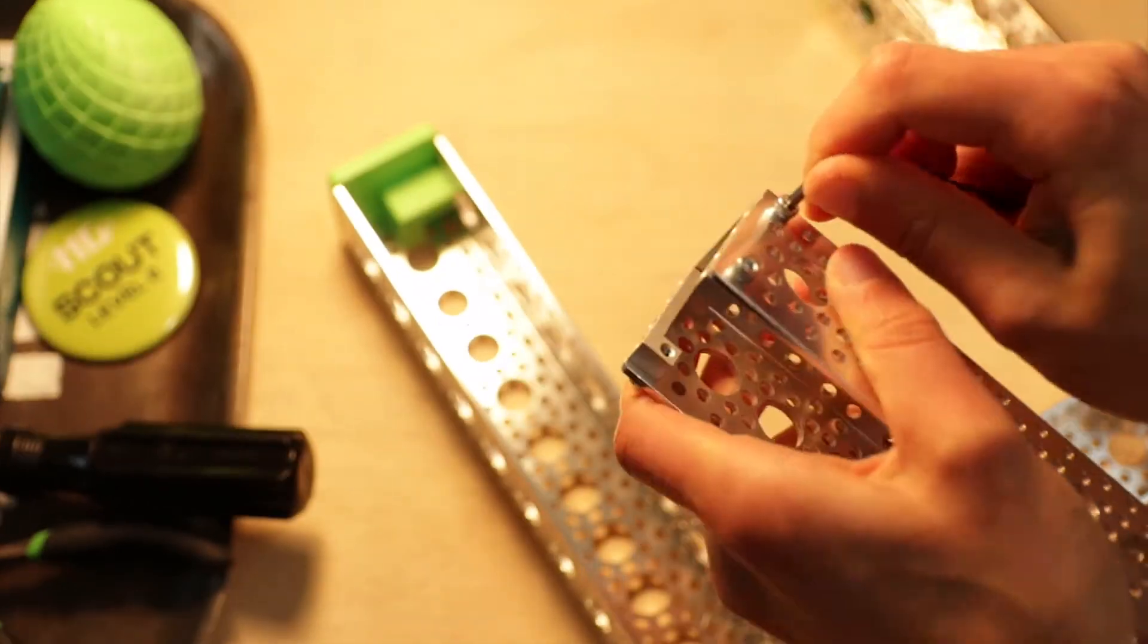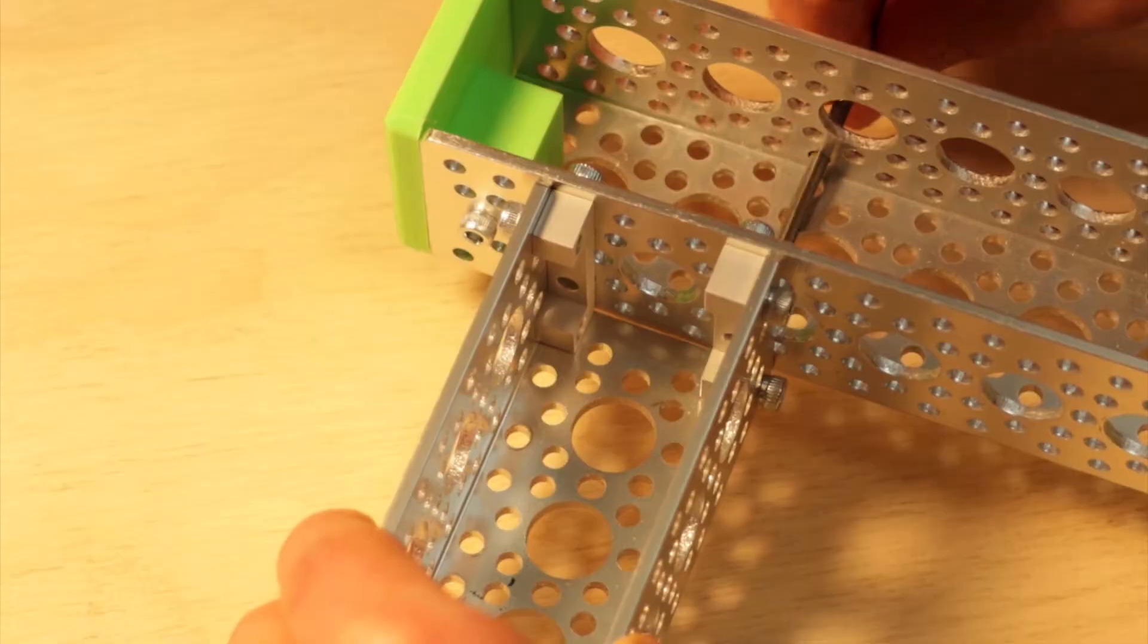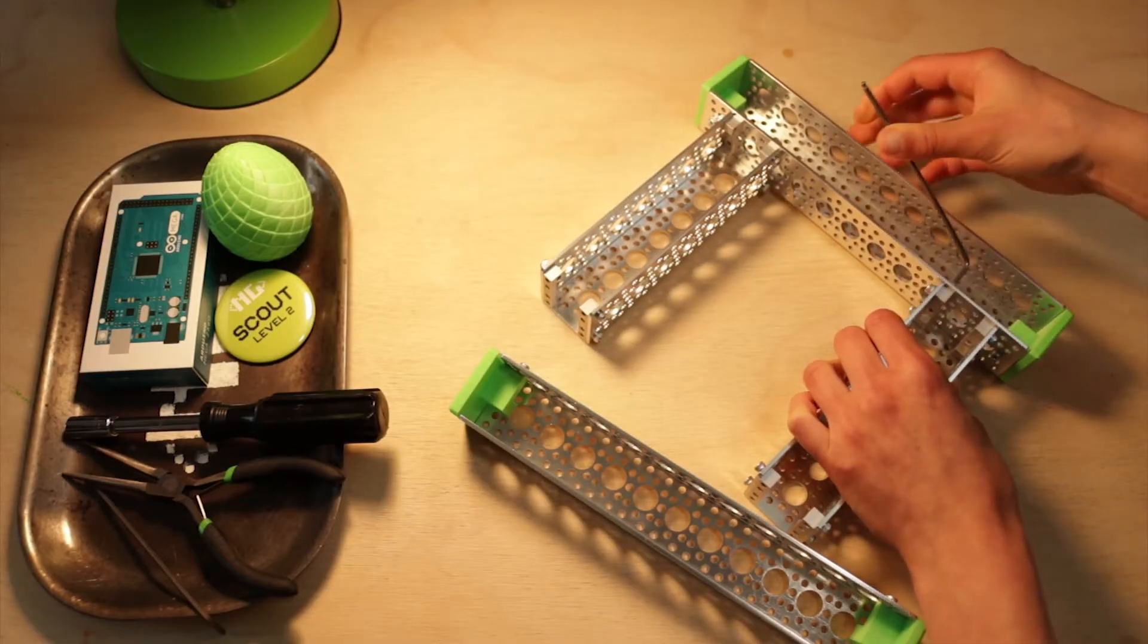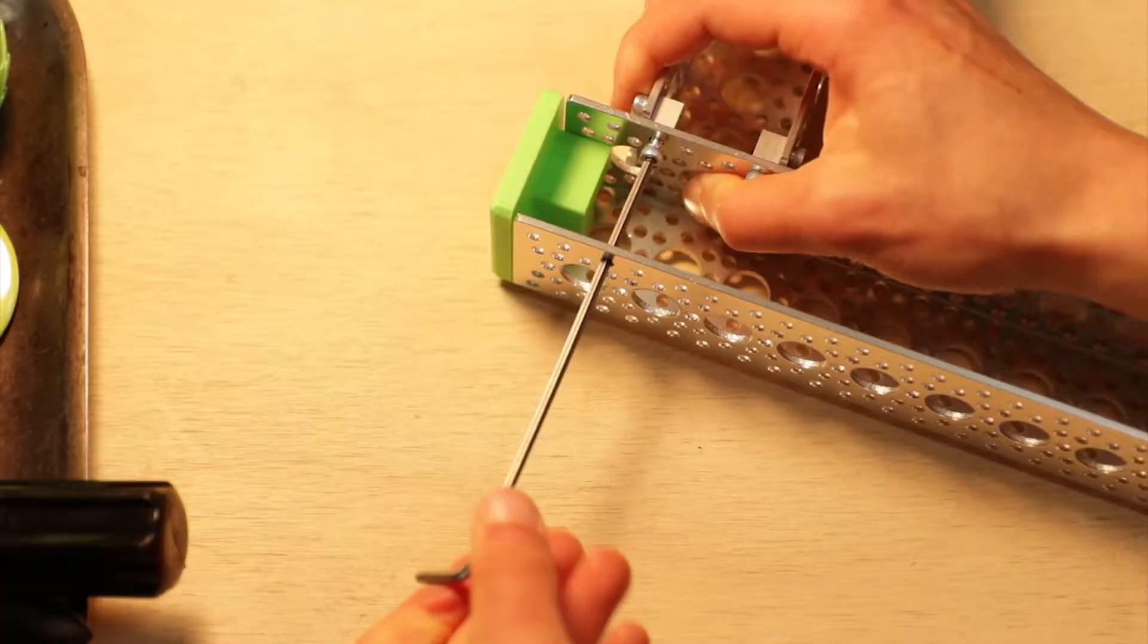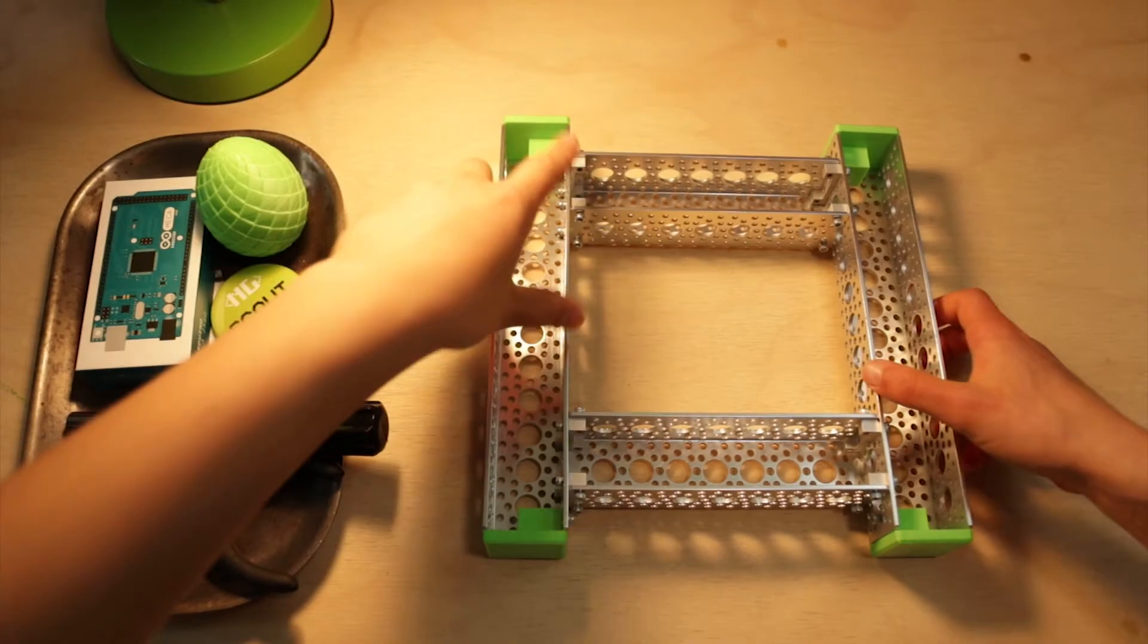Then you're gonna screw in the other side of the dual side mounts on either side of that second outermost big hole on either end of the eleven-hole channels.